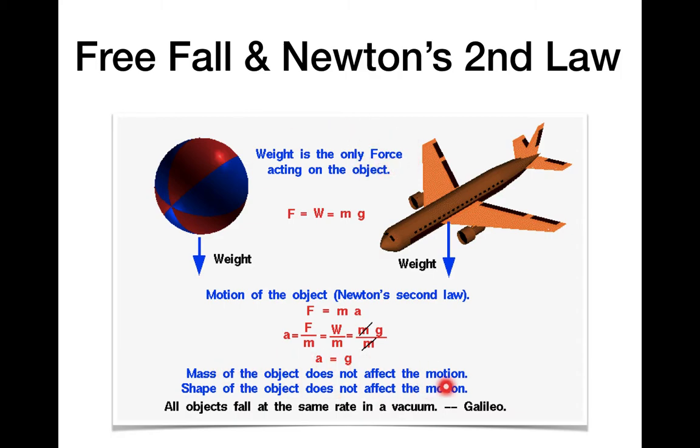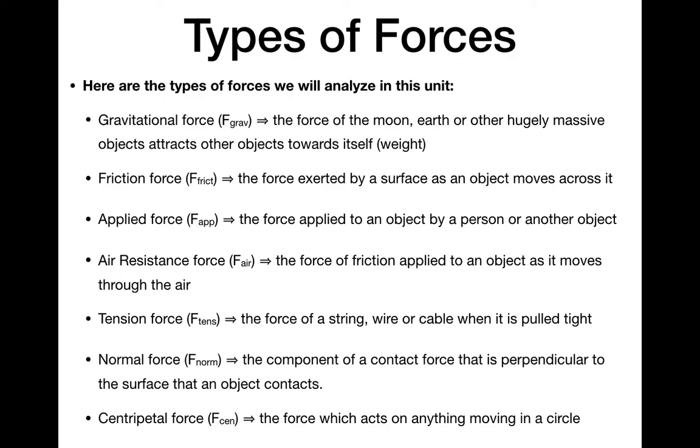So this shows us through a relationship between two formulas the idea that mass does not affect the motion of an object and shape does not affect the motion of an object. This is assuming that gravitation is the only force, so be careful. These statements are not true if we have things like air resistance, but if we're talking about just gravitation, then both the mass and the shape have no effect on the motion. They have an effect on the force but not on the motion. So Galileo predicted that all objects would fall at the same rate in a vacuum, which we did just see in our video.